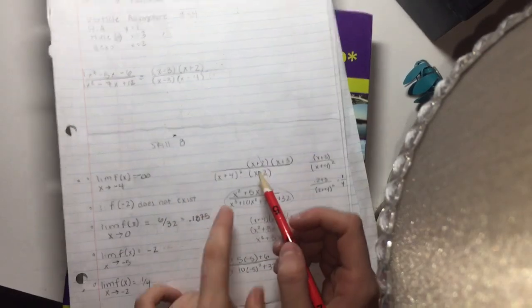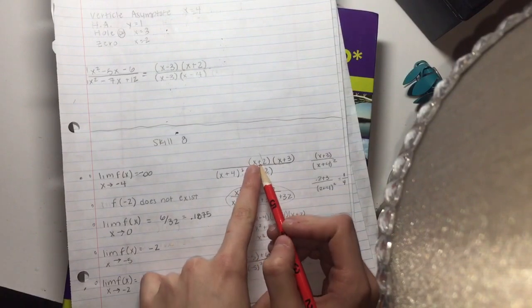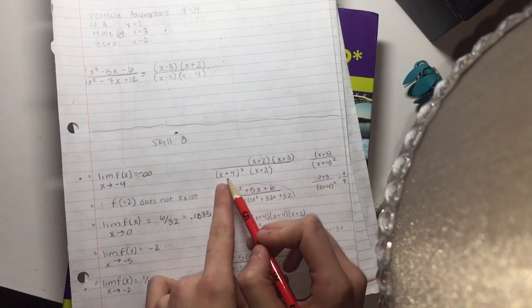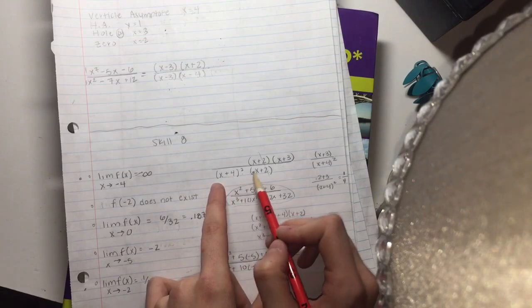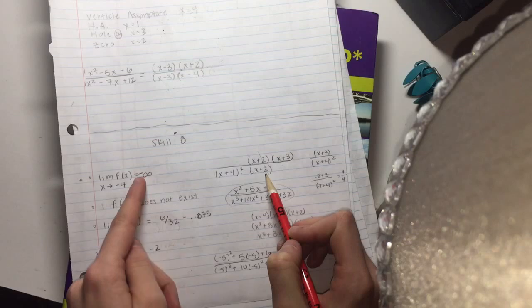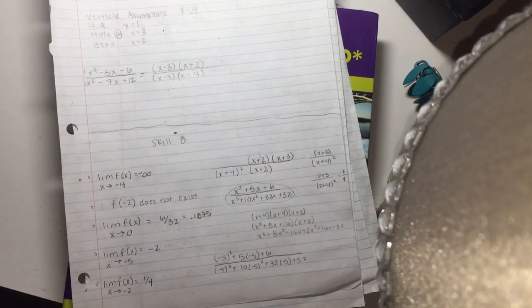But if you look at it, if you plug in negative 4 in the top here, you're going to get a positive value. And if you plug in a negative 4 in here, you're going to get a negative value. So that's why you also know that it's going to be negative infinity rather than positive infinity.